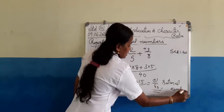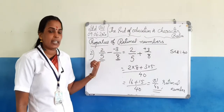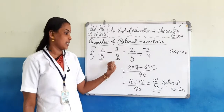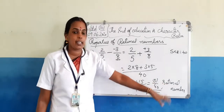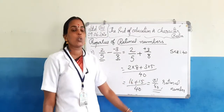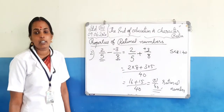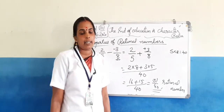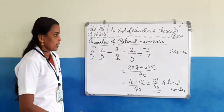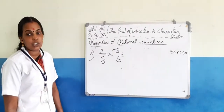So we subtracted 2 by 5 and negative 3 by 8, both rational numbers, and got 31 by 40, again a rational number. That means the difference of any two rational numbers is also a rational number — rational numbers are closed under subtraction.